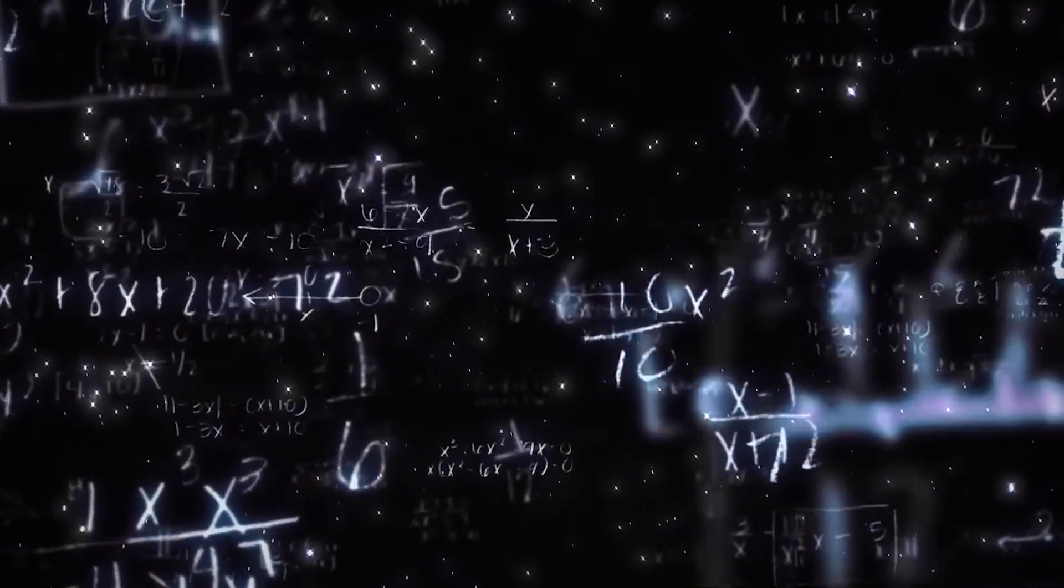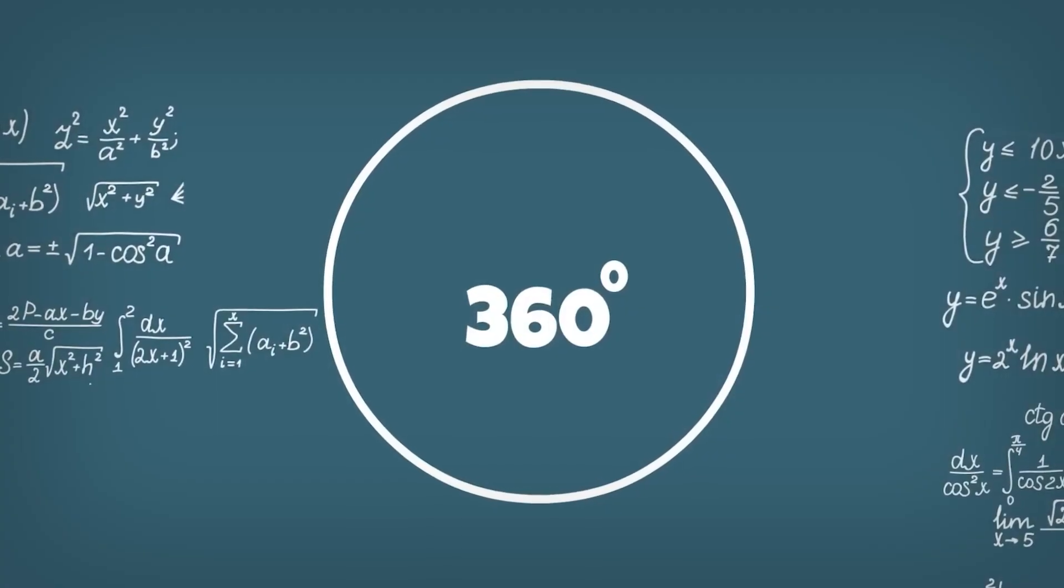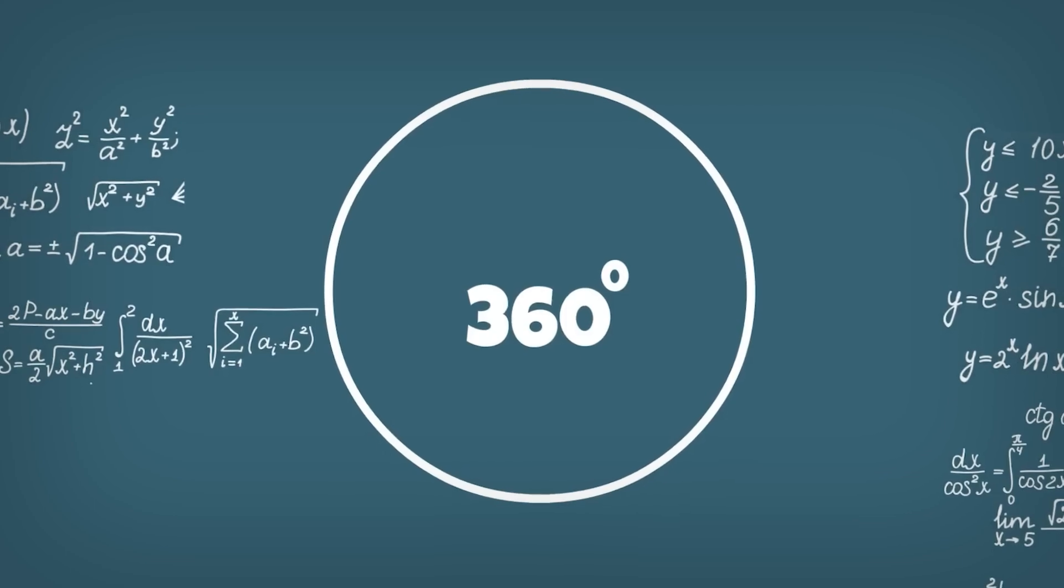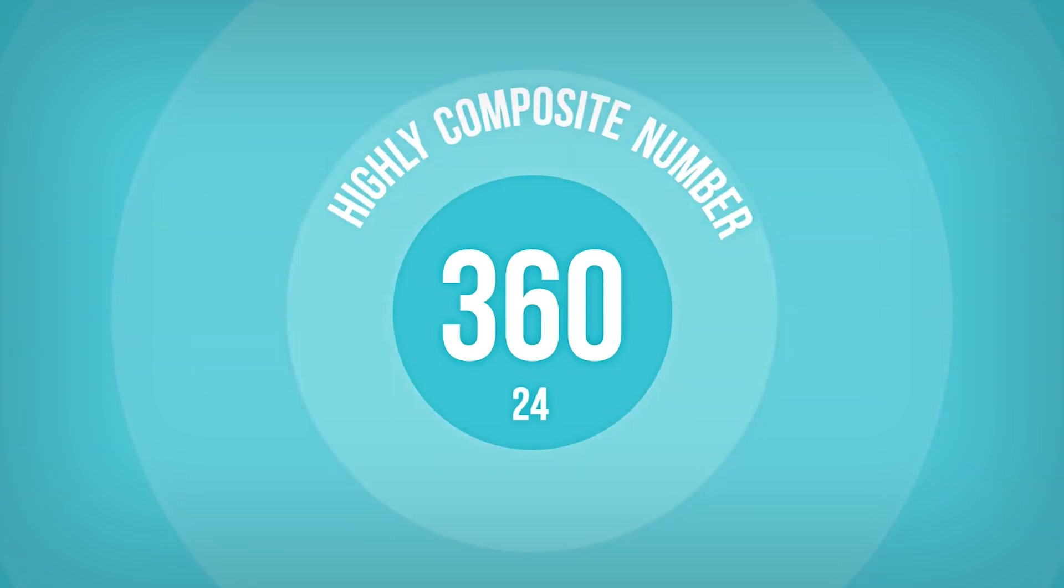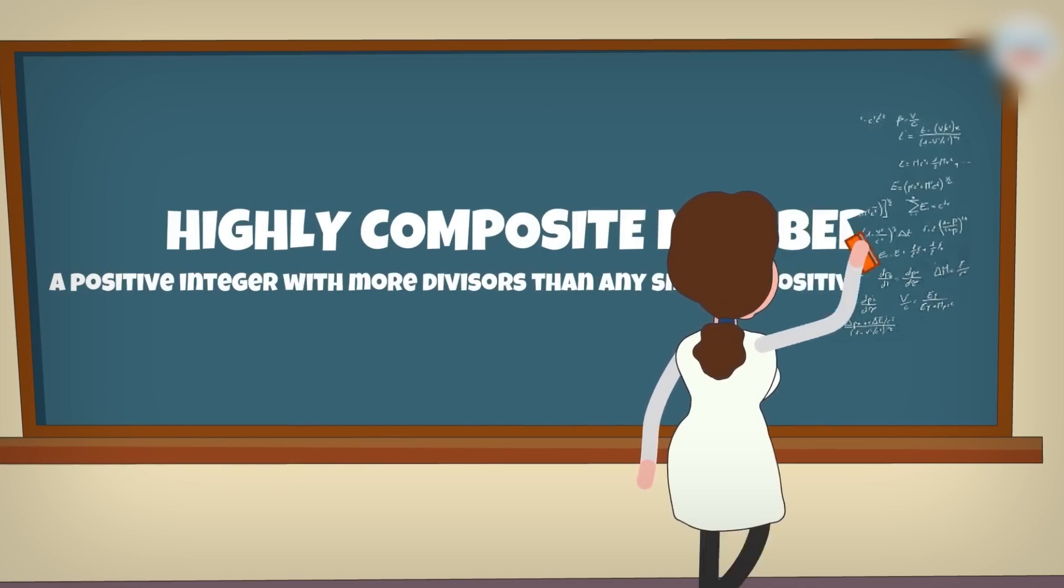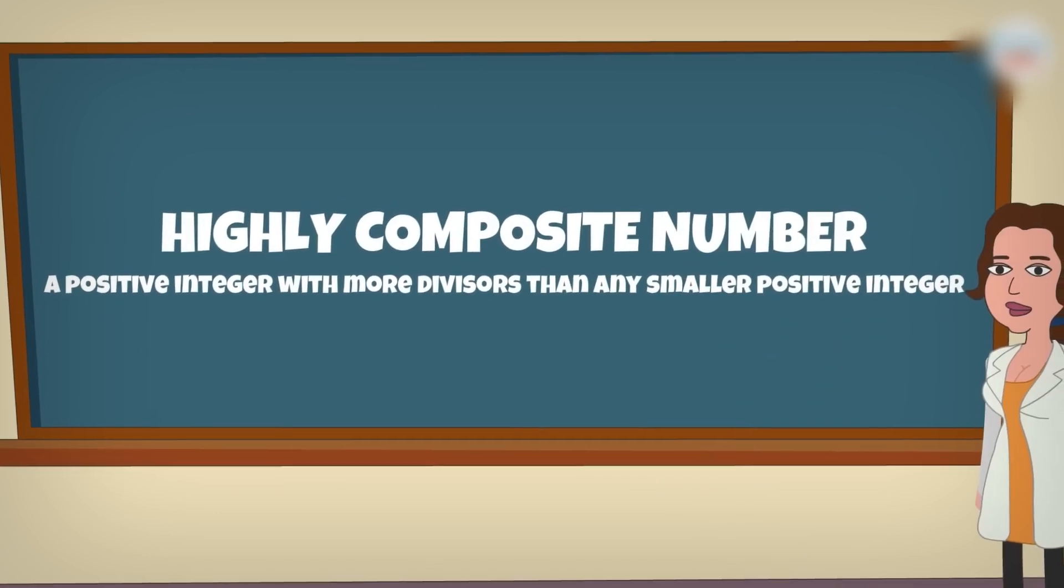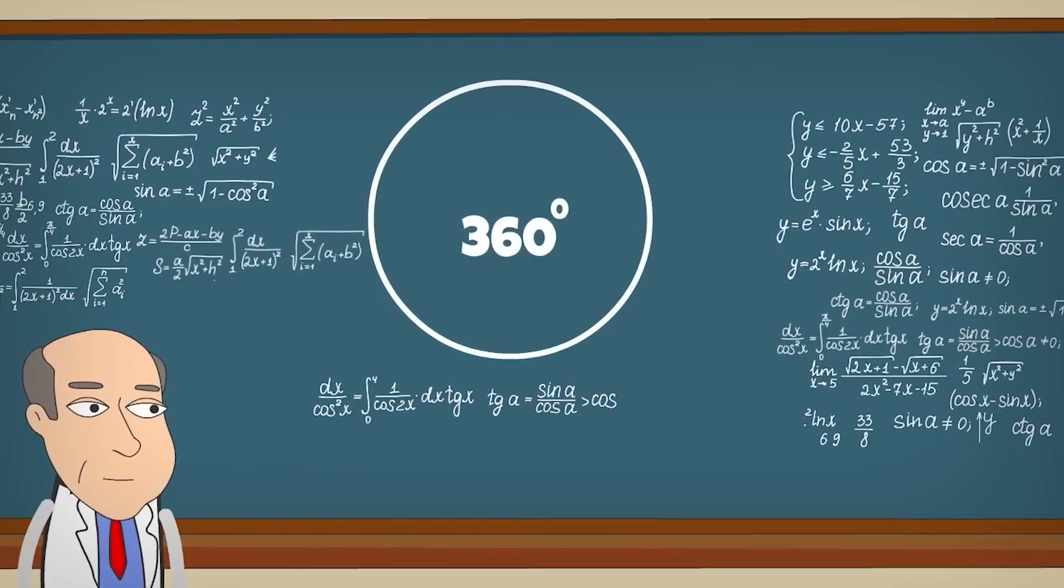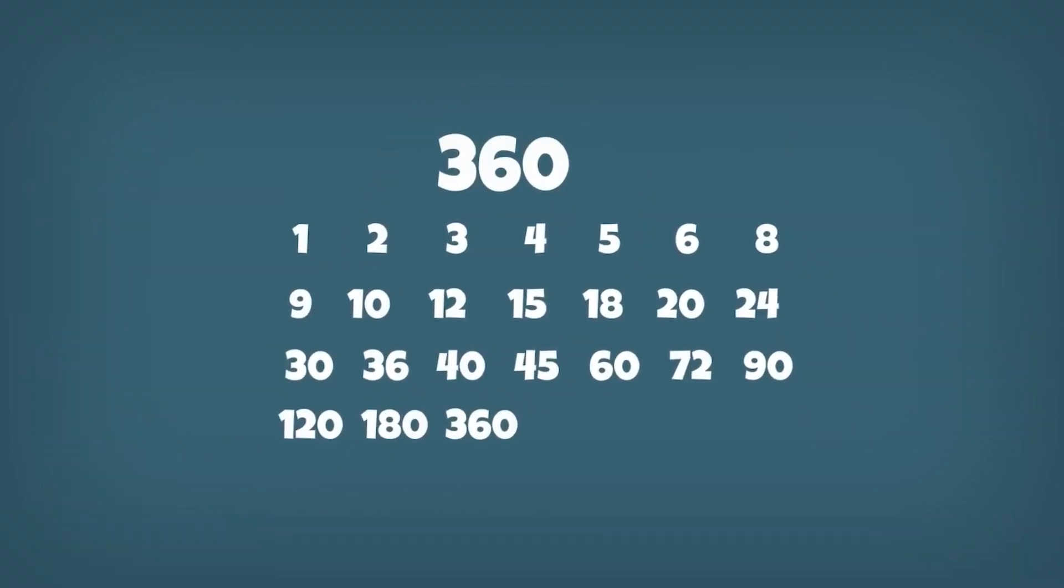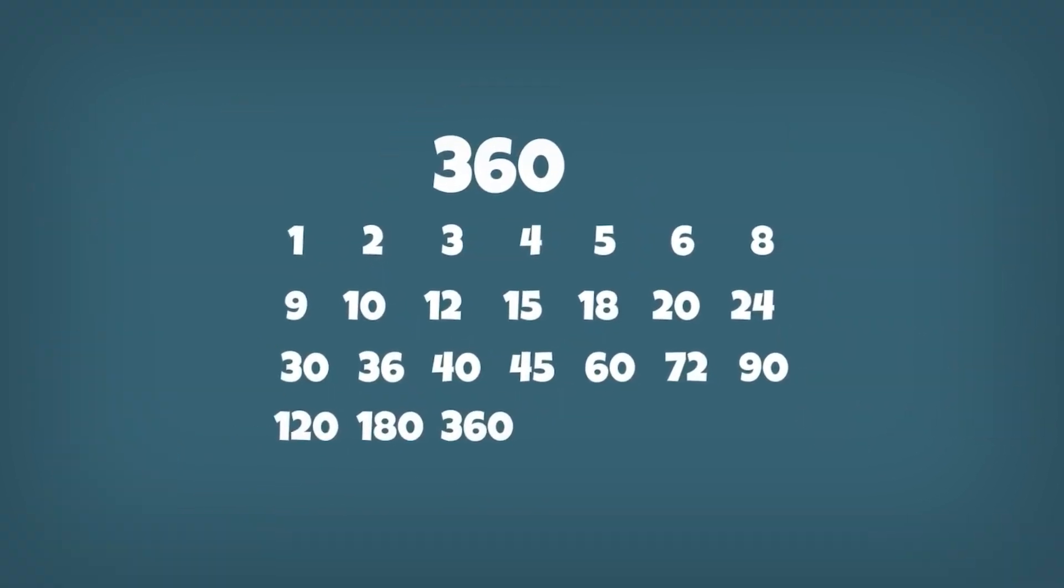But the tale doesn't stop here. The number 360 wields a certain allure from a mathematical viewpoint. It falls into the group of numbers known as the highly composite numbers. You may be asking yourself, what does that mean? A highly composite number is a positive integer with more divisors than any smaller positive integer has. In relation to 360, it possesses 24 numbers that can divide it seamlessly without leaving an excess.